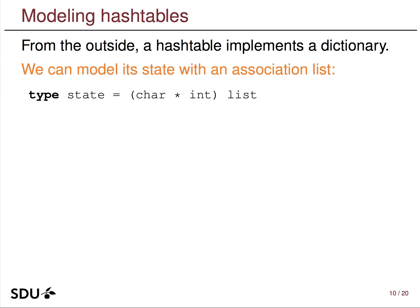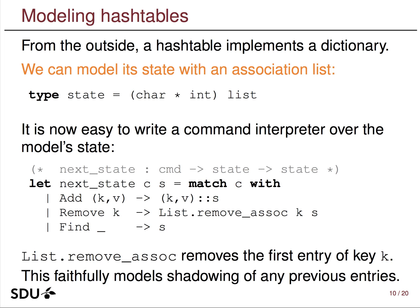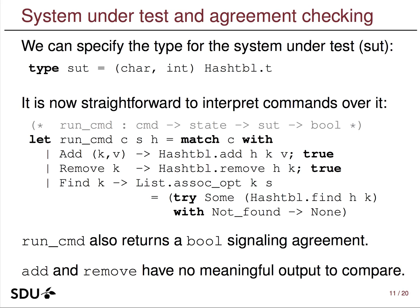For the model, I express my association list as type (char * int) list. I write a command interpreter over the model: given command C, I interpret an add instruction by adding the key-value pair to the association list, and interpret a remove using List.remove_assoc from the standard library. This faithfully models shadowing in OCaml's hash tables. Find has no side effect — it doesn't change the state — so it just leaves the state S unmodified.